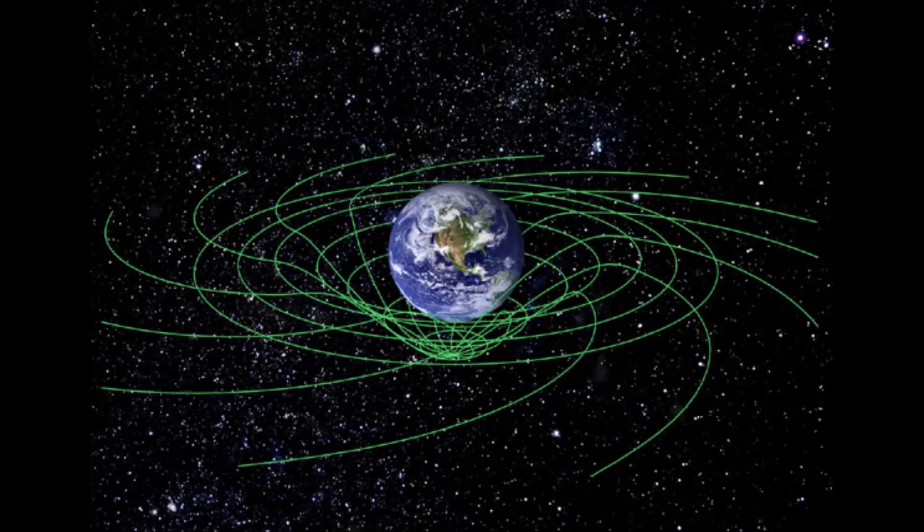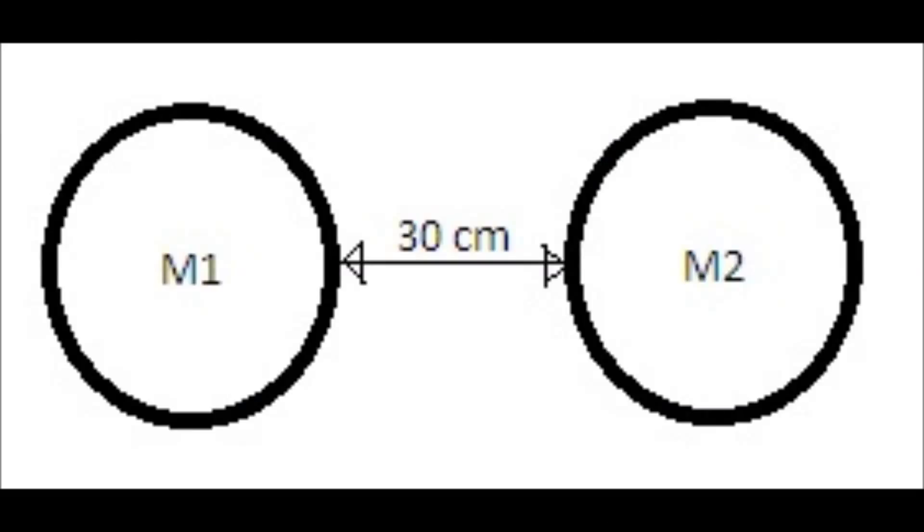We can do one experiment in space where there is zero gravity. We can take two heavy balls in space, M1 and M2, where zero gravity is available. Those two balls should have small distance between them. Now we have to observe that can they attract each other or not.